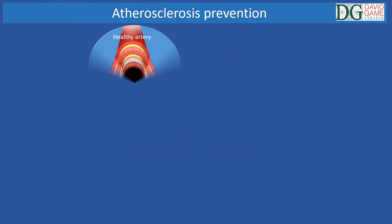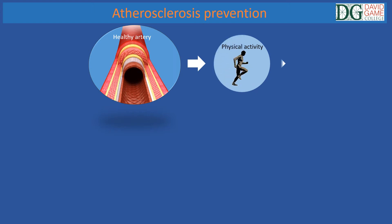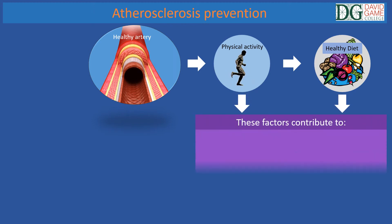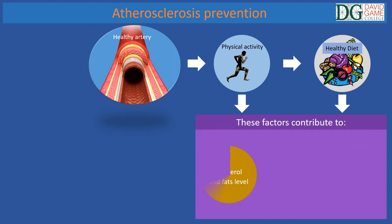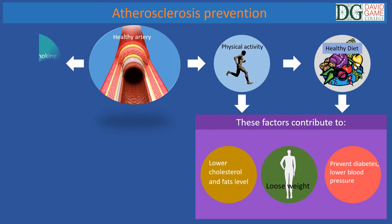A number of interventions can be implemented to reduce the risks of developing atherosclerosis. These include increasing physical activity such as walking, running or cycling, and having a healthy diet — factors which contribute to lowering cholesterol and fat levels, losing weight, decreasing the incidence of developing diabetes, and lowering blood pressure. Quitting smoking and improving lifestyle are also important.